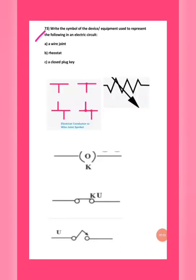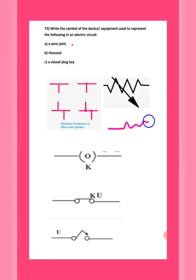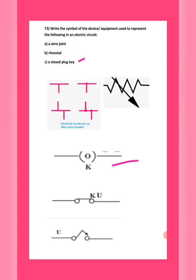Question number 73: write the symbols for the following electric circuit components — a wire joint, a rheostat, and a closed plug key. For a wire joint you can draw two wires meeting with a dot or circle at the junction. For a rheostat (variable resistor) draw a resistor with an arrow indicating variation. For a closed plug key, draw the standard closed key symbol. Very easy question.